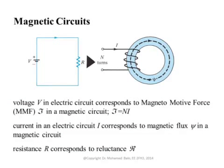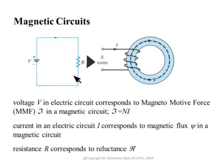In the second part of this lecture, we address the concept of magnetic circuits. We know that in electric circuits, you usually have a voltage source, you have resistances configured in parallel or series, whatever the configuration may be, and this voltage source will supply current.